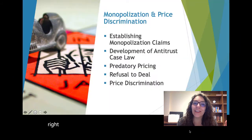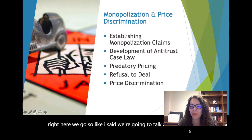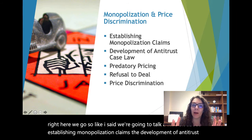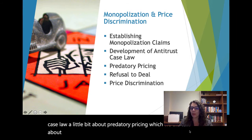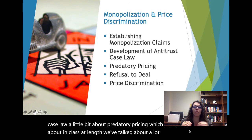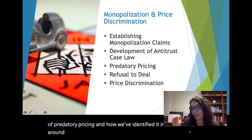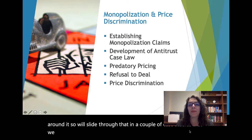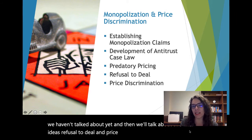This is chapter eight in the Viscusi textbook that we're using, and we're going to be talking about monopolization and price discrimination, some case studies, some examples, and some of the history of it. We'll cover establishing monopolization claims, the development of antitrust case law, predatory pricing, refusal to deal, and price discrimination.